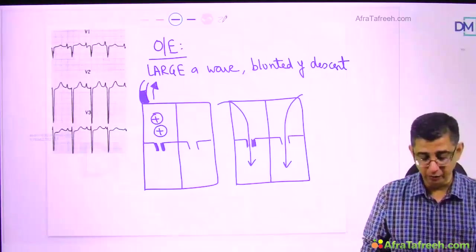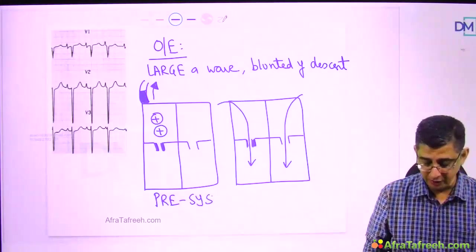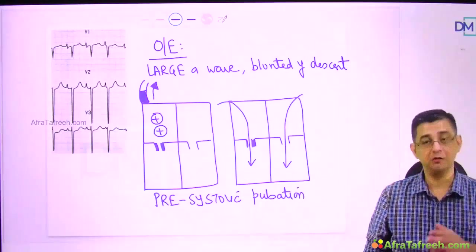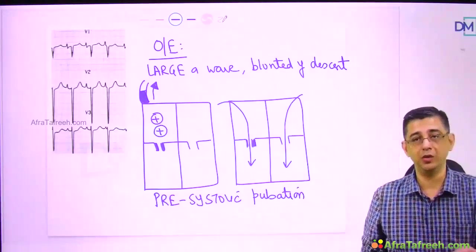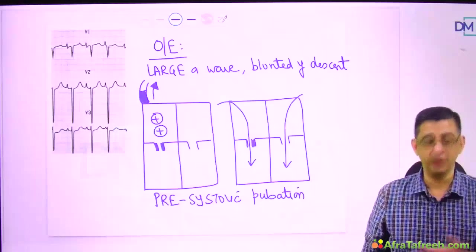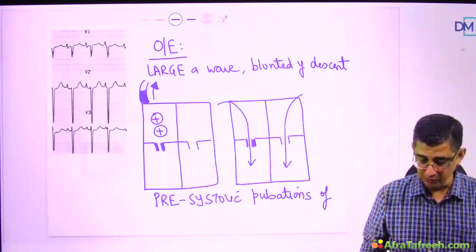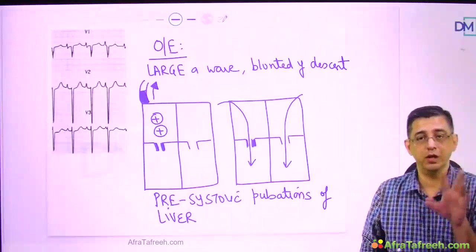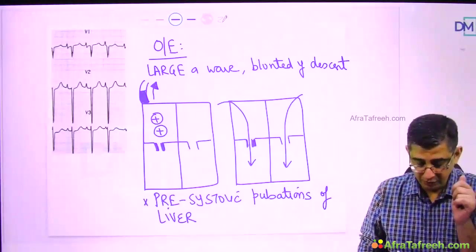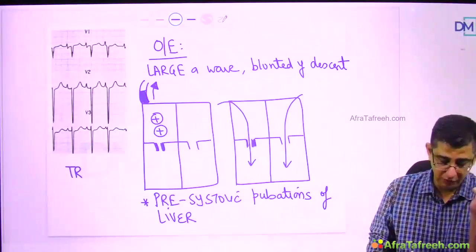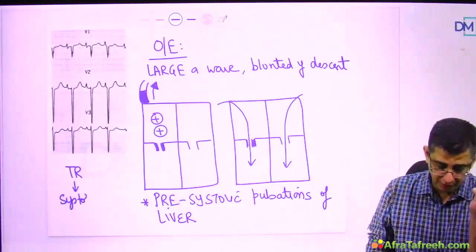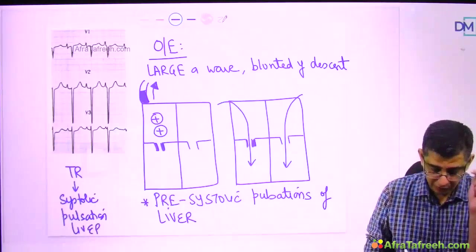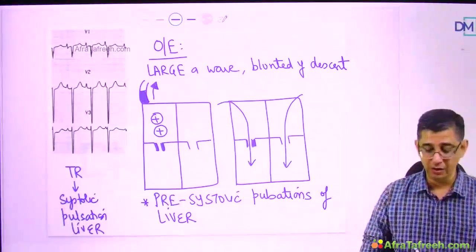Another characteristic feature is pre-systolic pulsations of the liver. Note: systolic pulsations of the liver are a feature of tricuspid regurgitation, which operates during systole. Tricuspid stenosis occurs when the heart is relatively relaxing. So pre-systolic pulsations of the liver are a feature of TS. A pulsatile liver is seen in both TS and TR, but in tricuspid stenosis the pulsation is pre-systolic, while in tricuspid regurgitation it is systolic.